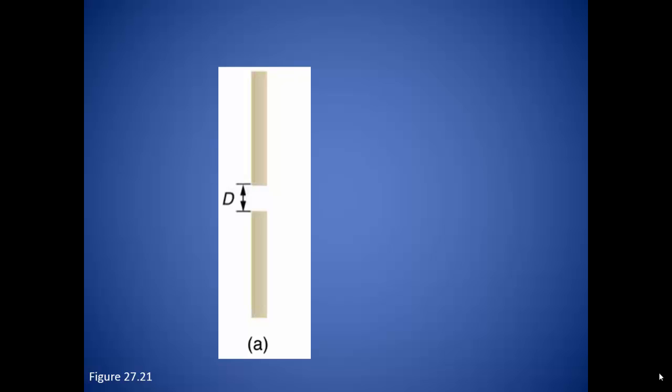Even when light passes through a single slit, it will interfere. In the case of a double slit, there are essentially two sources of light that can interfere with each other. The same thing happens in a single slit situation, even though there is only one place where the light is coming from — light can actually interfere with itself.